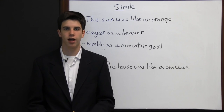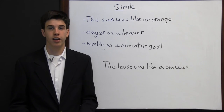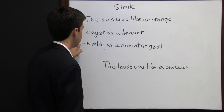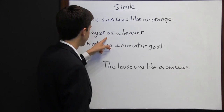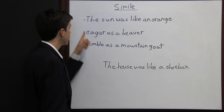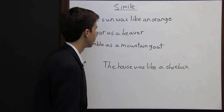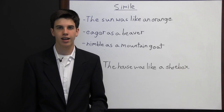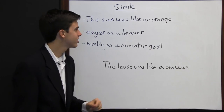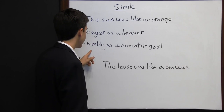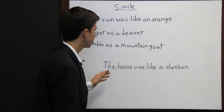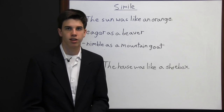A simile is a figurative expression in which the author compares one thing to that of another using the word like or as. Here are some examples: "The sun was like an orange," "eager as a beaver," "nimble as a mountain goat." Here the author is using the word like and the word as. The author is comparing the sun to the orange — the reader is now imagining an orange in the sky. And if the author was describing someone as being nimble, no longer are they just thinking of someone being nimble; they're thinking of that person as a mountain goat.